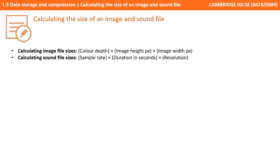Just to recap: we can calculate the size of an image file by taking the colour depth, multiplying by the image height in pixels, multiplied by the image width in pixels. We can calculate the size of a sound file by taking the sample rate, times by the duration in seconds of that sample, times by its resolution.